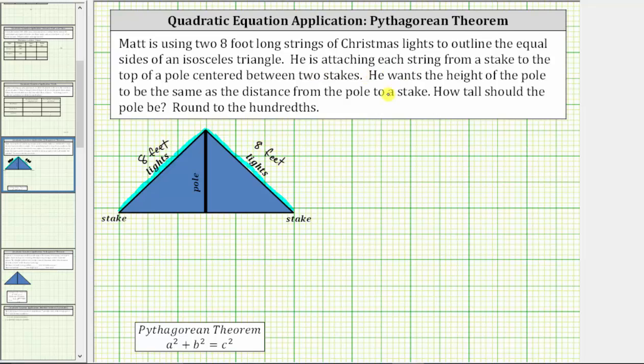Next, he is attaching each string from a stake to the top of a pole centered between the two stakes, which means he will attach the lights at a stake here and then at the top of the pole here along this side, as well as from here to here along this side.